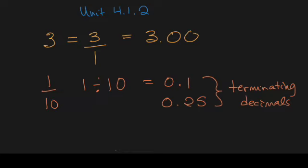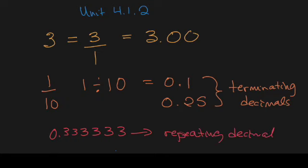Alternatively, if we have decimals such as 0.3333333, we can keep going as far as we want, this is an example of what we call a repeating decimal. And instead of writing 3 3 3 3 3 3, we can denote a repeating decimal as 0.3 with a bar over top of the decimal, or the decimals that repeat.